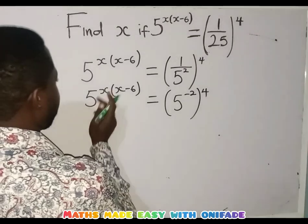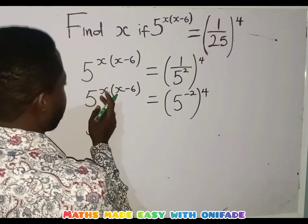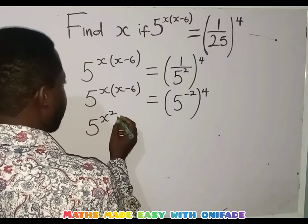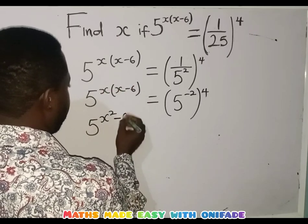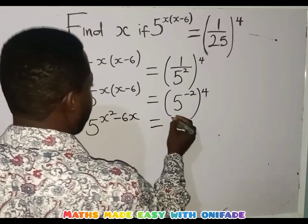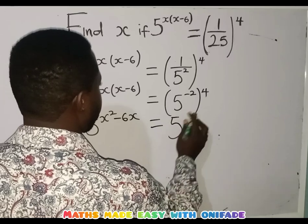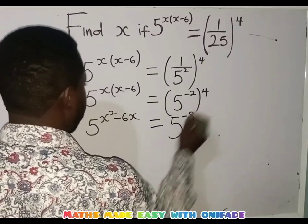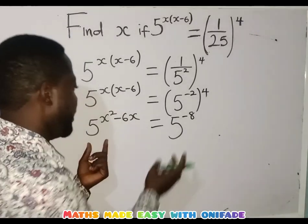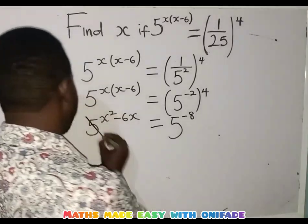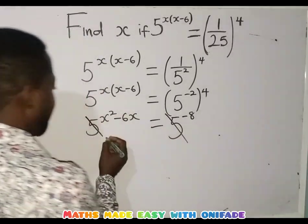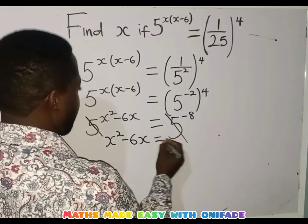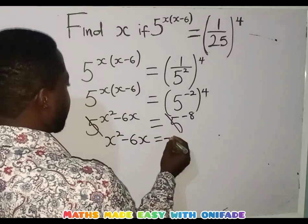So now let's multiply the powers. I am going to have x times x, which is x squared, and x times minus 6, which gives minus 6x, equals to 5 raised to the power minus 2 times 4, which gives me minus 8. So since the bases are the same, I am going to cancel them out. Then I will be left with x squared minus 6x equals to minus 8.